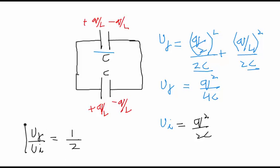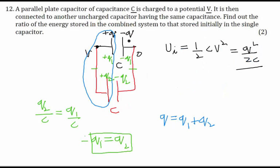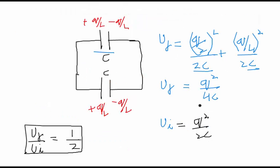So this will be the answer to our question. It was asking the ratio of energy stored in the combined system to that stored initially in the single capacitor. Single capacitor had Q²/2C and the final one had Q²/4C. So it had half of the initial one, meaning initially the energy was double that at the end.